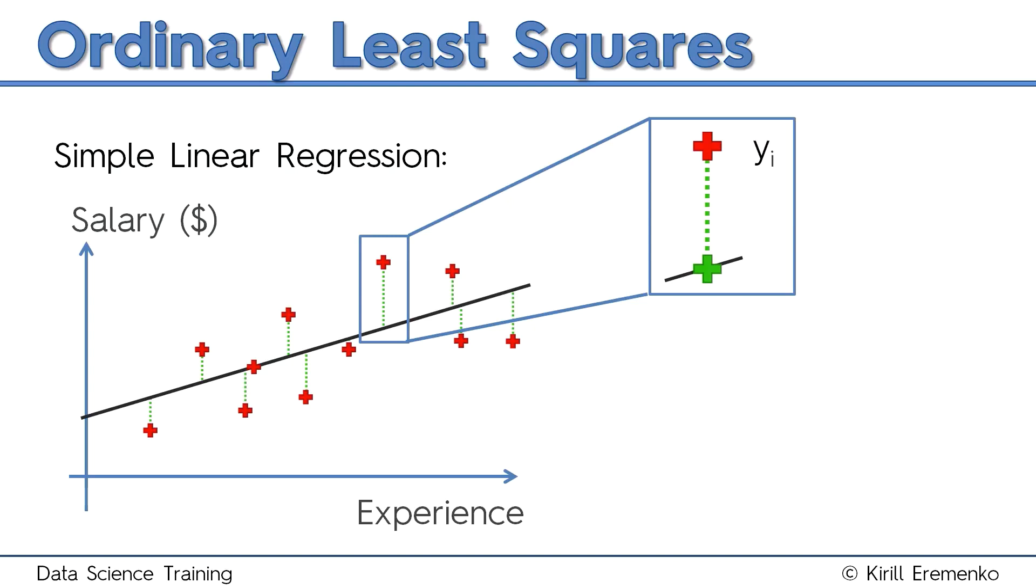So now the red cross is called Yi, Y with subscript i, and that is the actual observation. The green cross is called Yi-hat, and that is the modeled observation or the modeled value.